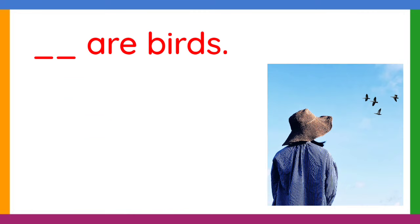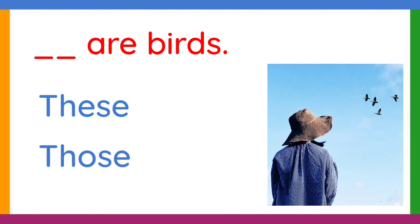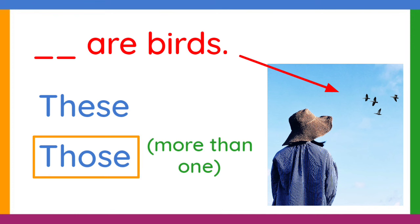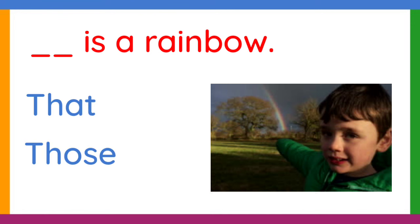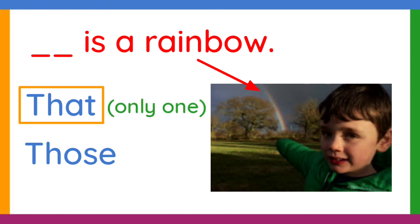Another one: blank are birds — these or those? The answer is those, because the birds are far from the person. Next: blank is a rainbow — that or those? The answer is that, because the person is pointing to only one rainbow.